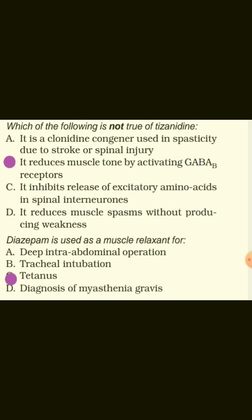The following is not true of tizanidine: that it reduces muscle tone by inactivating gamma-B receptors. The true statements about tizanidine are: it is a clonidine congener used in spasticity due to stroke or spinal injury, it inhibits release of excitatory amino acids in spinal interneurons, and it reduces muscle spasms without producing weakness. Diazepam is used as a muscle relaxant for tetanus.